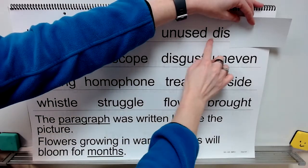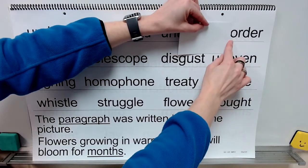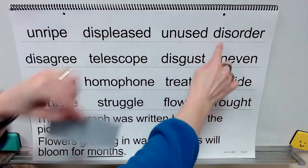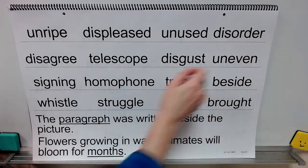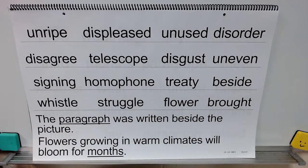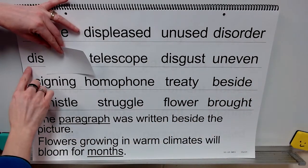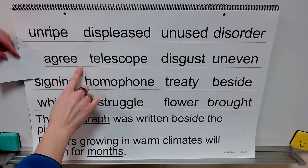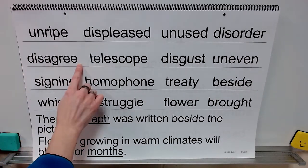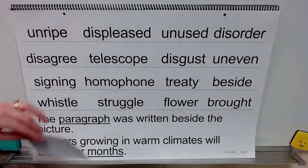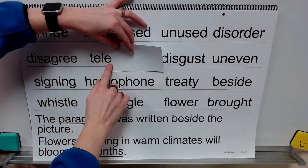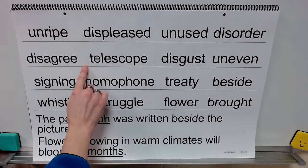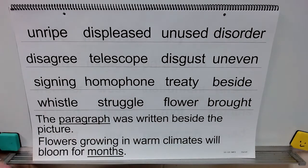Prefix dis, here's our base word order. What word? Disorder. Prefix dis, base word agree. Word: disagree. Root: tele. Base: scope. Word: telescope.